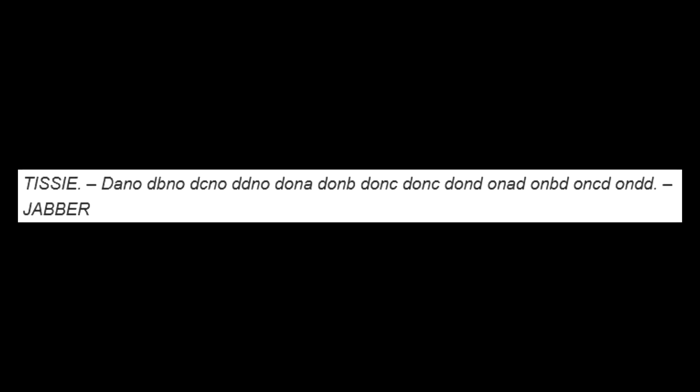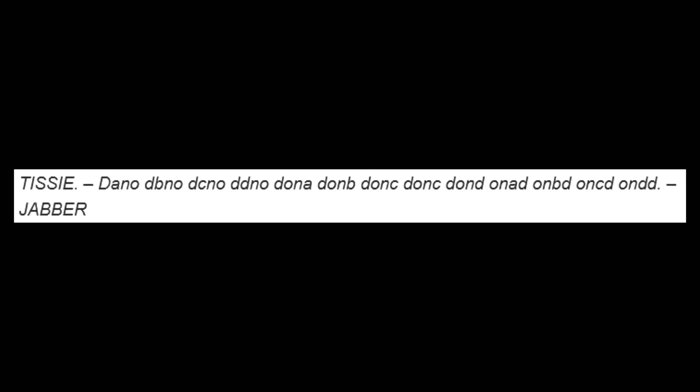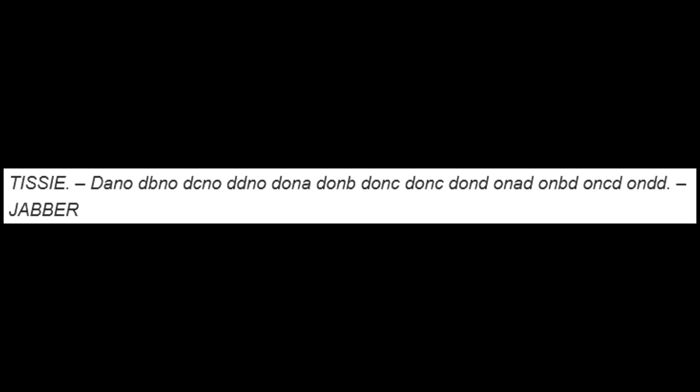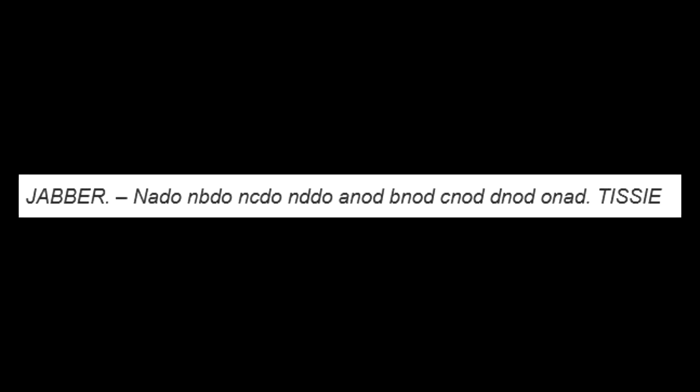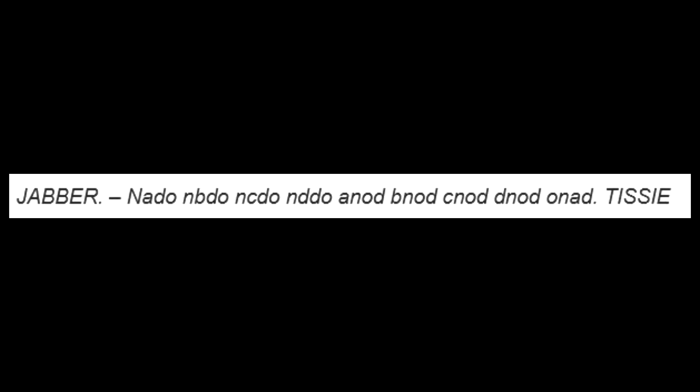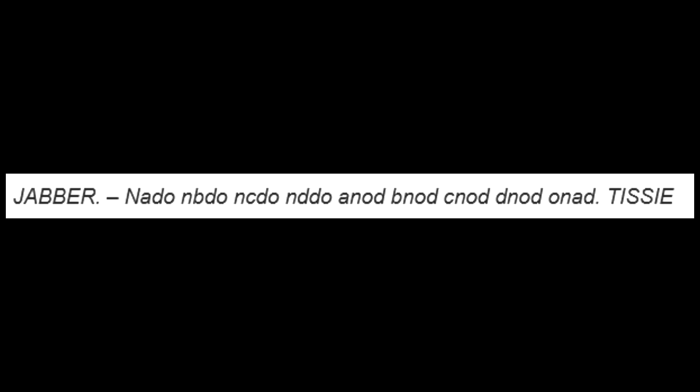A similar pair of short messages ran in a different newspaper, the Daily Mail, a few decades later in September 1901. These were between people who signed their names as Jabber and Tissy, and each are a single sentence of several words, with each word being four letters and predominantly made up of Ds. Although a few theories have been proposed, such as the messages being about horse betting, these messages also remain unsolved.